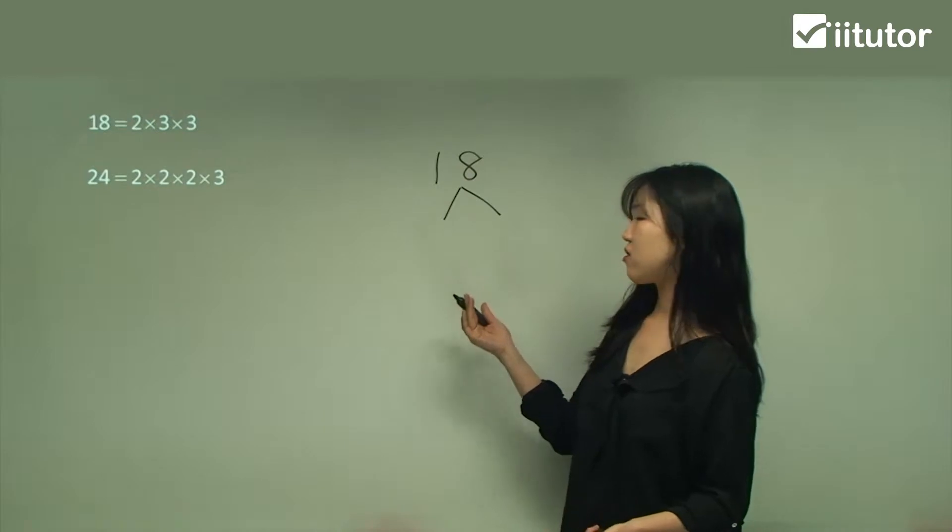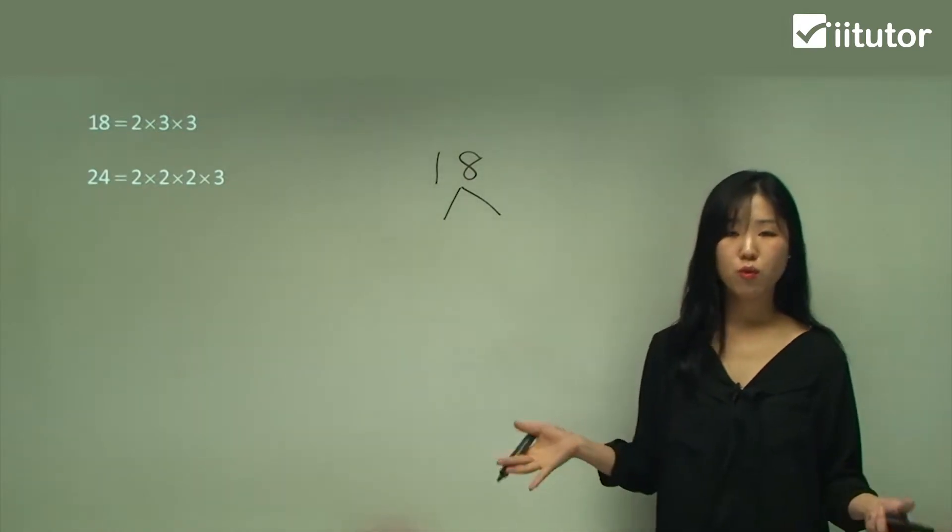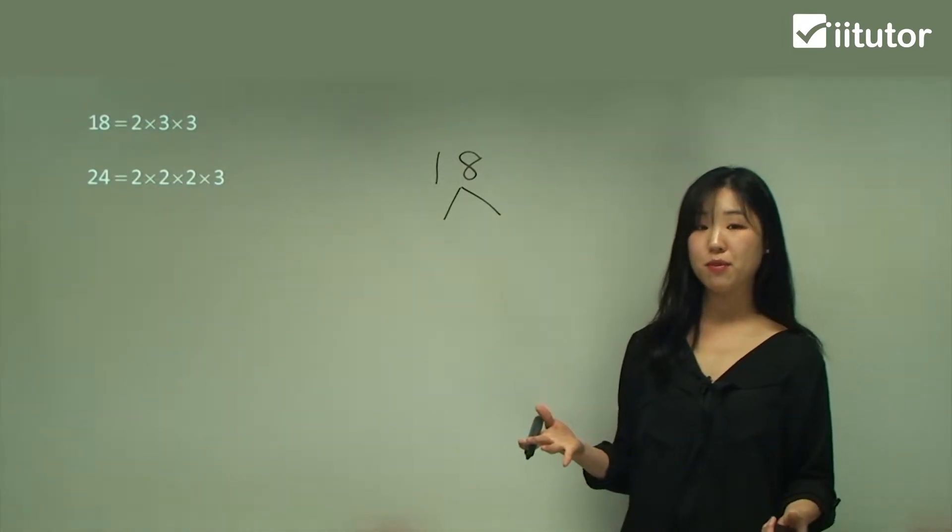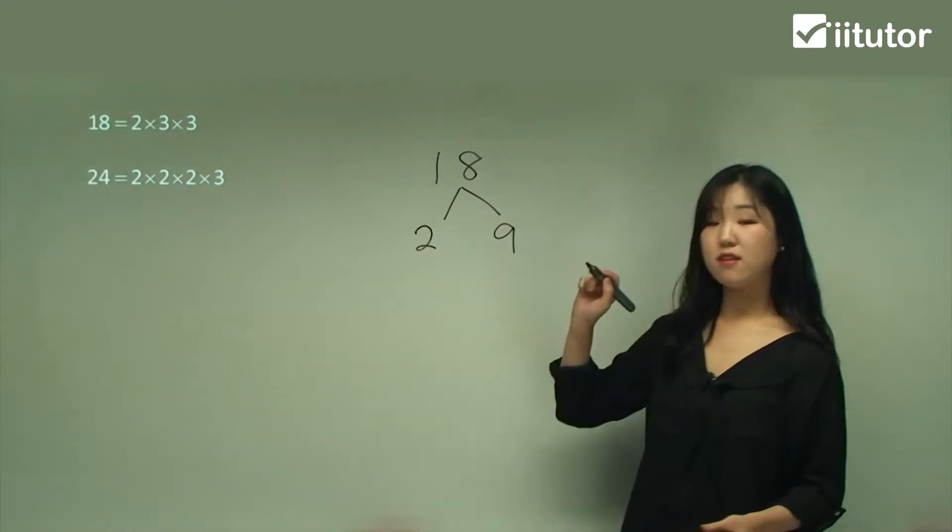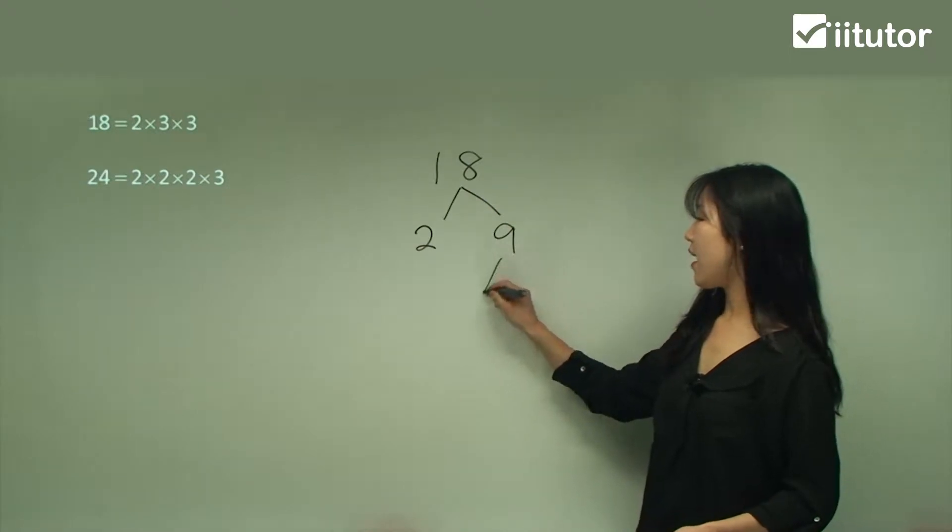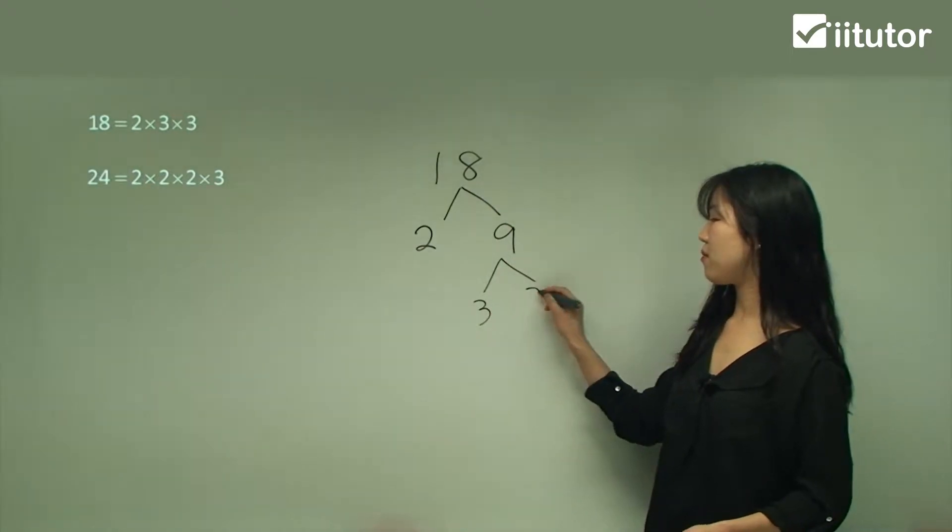So what goes into 18? It can be 2 or 3, those are the prime numbers. I'll just start with 2. 18 divided by 2 is 9, and then 9 is 3 times 3.